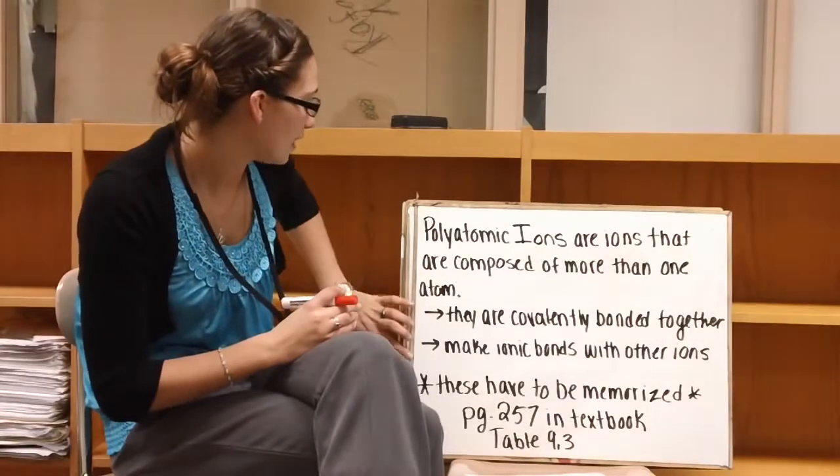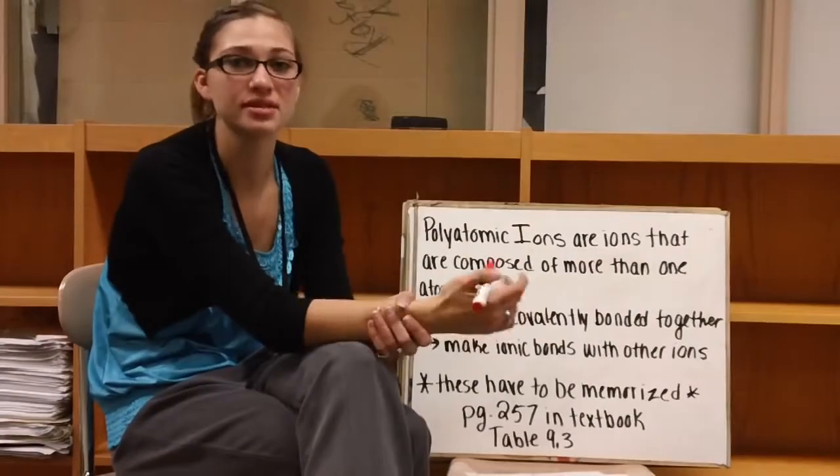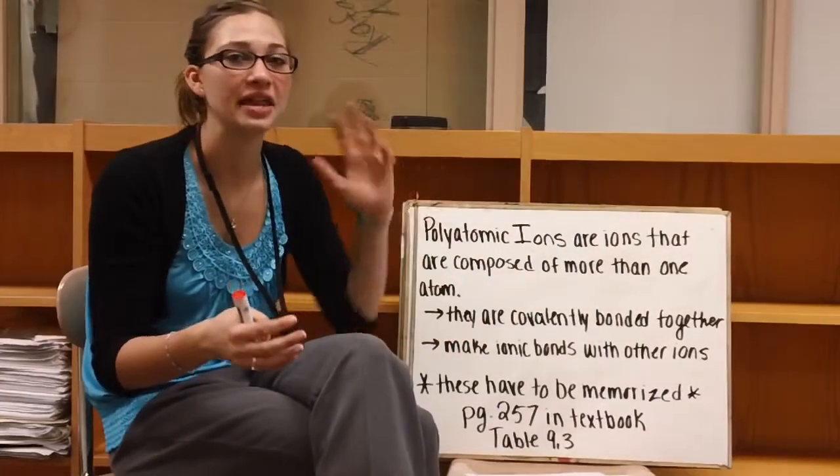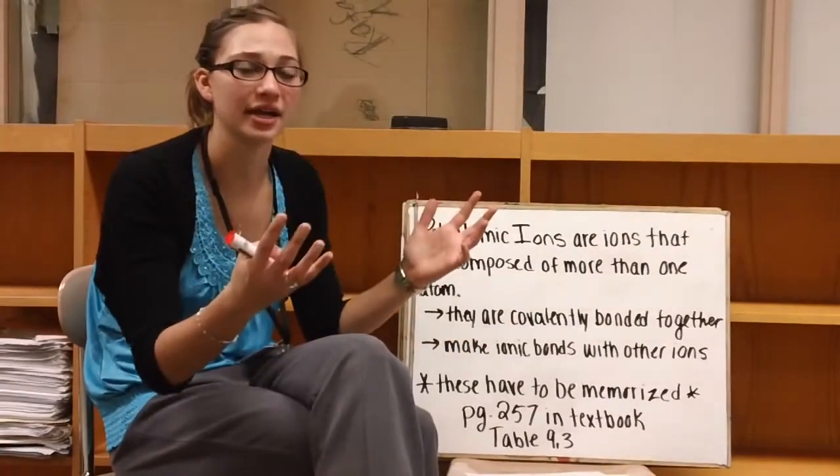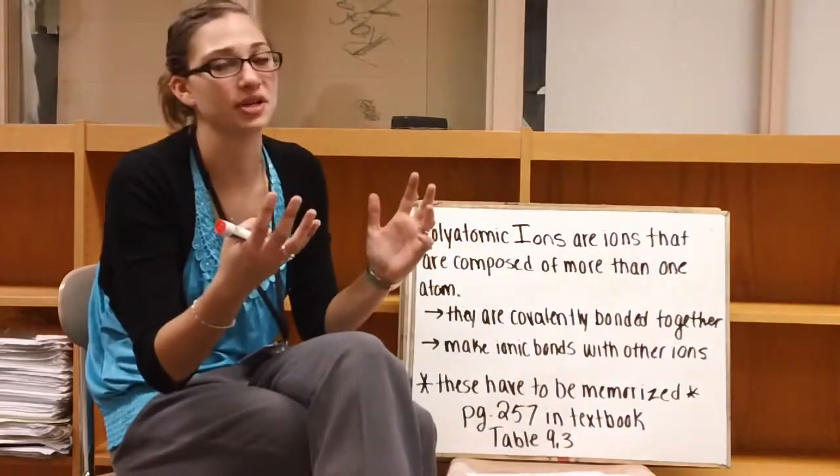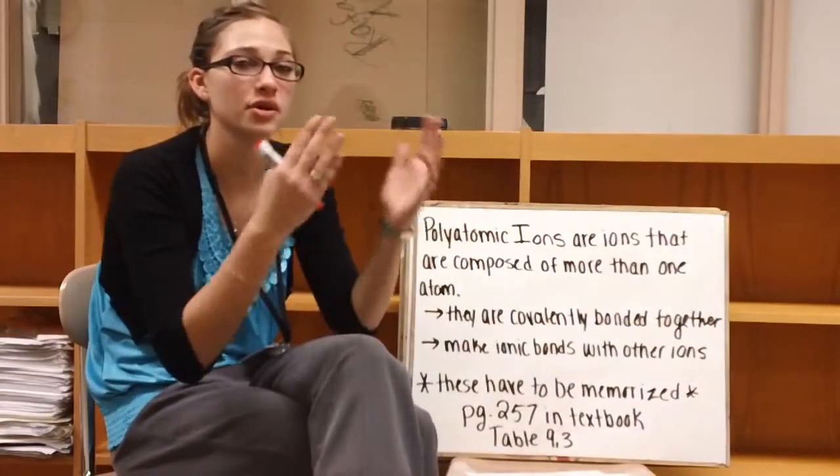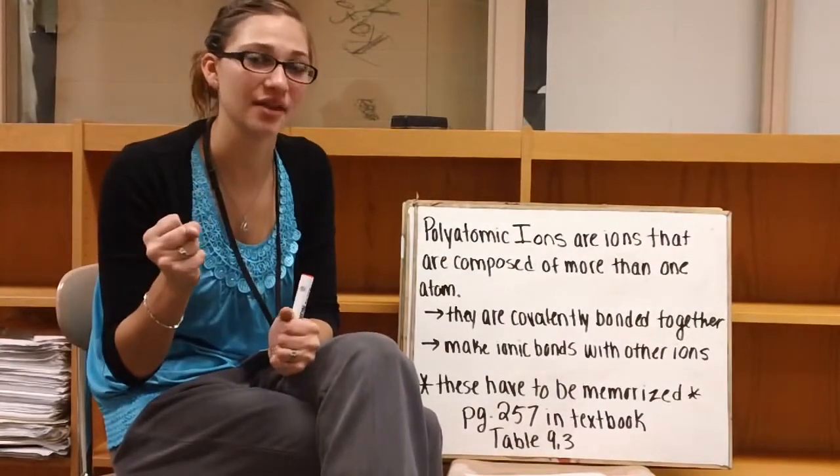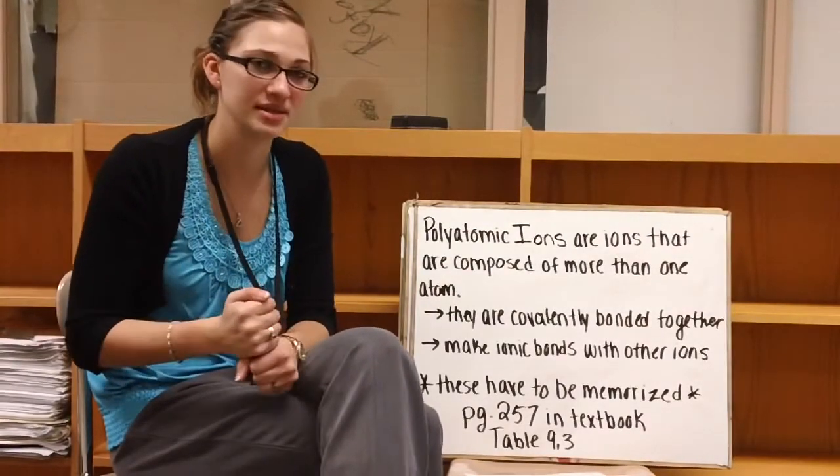So when polyatomic ions that are in an ionic compound are put into water, the cation and the anion, so usually the polyatomic ion is going to be your anion, those two are going to separate, but the polyatomic ion is going to stay together. Covalent bonds are not going to separate in water.